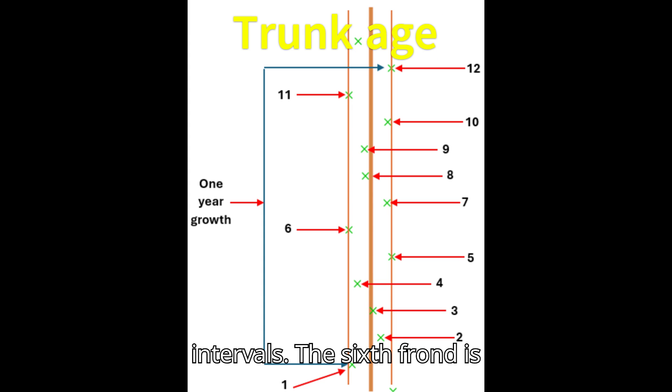The sixth frond is directly opposite the first frond vertically, and the eleventh frond is vertically aligned with both the first and sixth fronds.